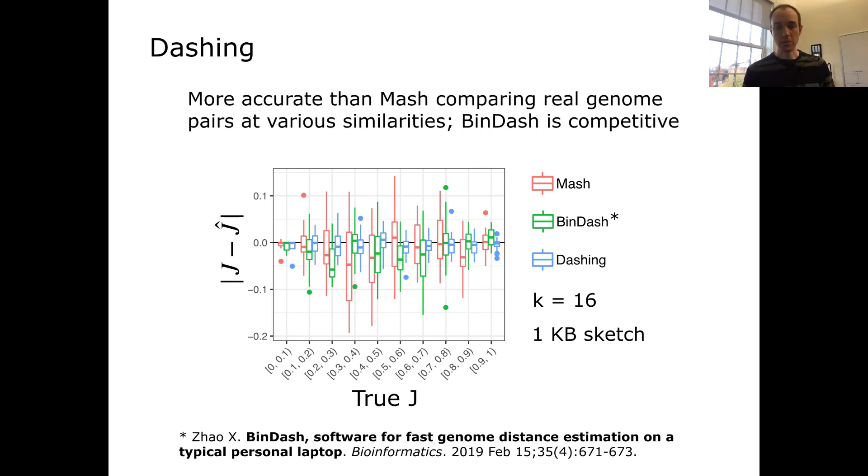In another experiment, we took some real bacterial genomes and formed 400 pairings of those genomes that altogether achieved an even distribution across the range of true Jaccard coefficients, from zero all the way up to one. We calculated the true Jaccard coefficient for each of these pairs using a very big and not practical data structure, but we did that just for the purpose of knowing what the correct answer was. Very consistently across the full range of true Jaccard similarities, Dashing produced very accurate Jaccard similarity estimates. Consistently more accurate than MASH, and quite competitive with another excellent tool called BinDash, which uses a different variation on the MinHash idea called b-bit minwise hashing.